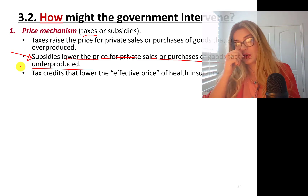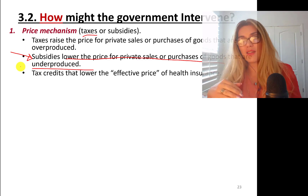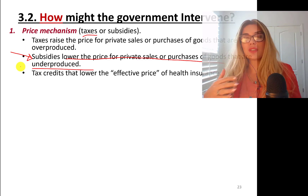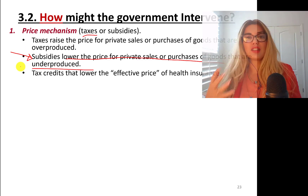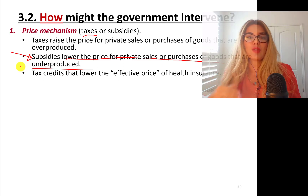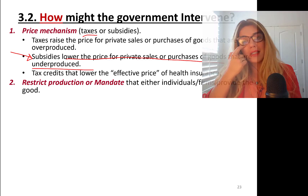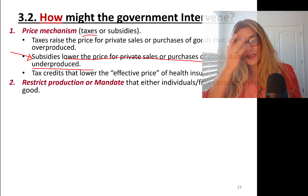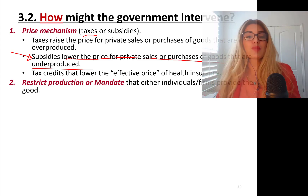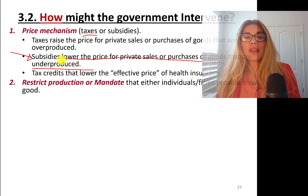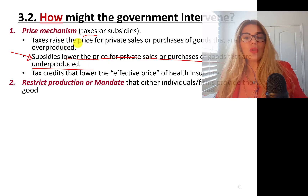Tax credits lower the effective price of health insurance. We used to have government-provided insurance options, and the government would give tax credits for purchasing it in the marketplaces. The second way government intervenes is by restricting production or mandating — either restricting the production of a good or service, or mandating that people buy a service.